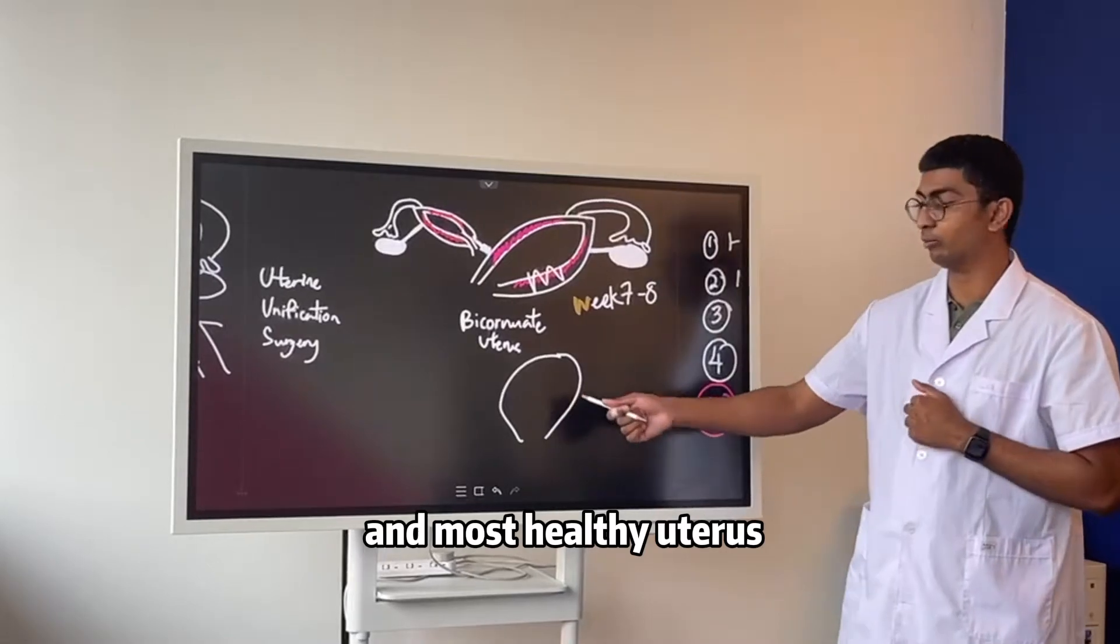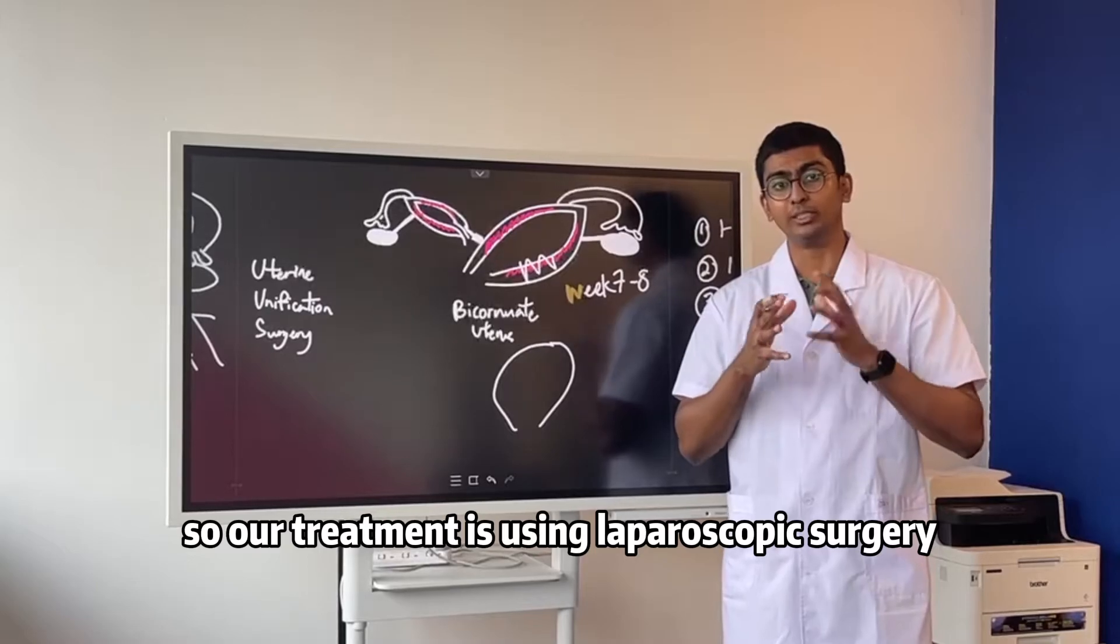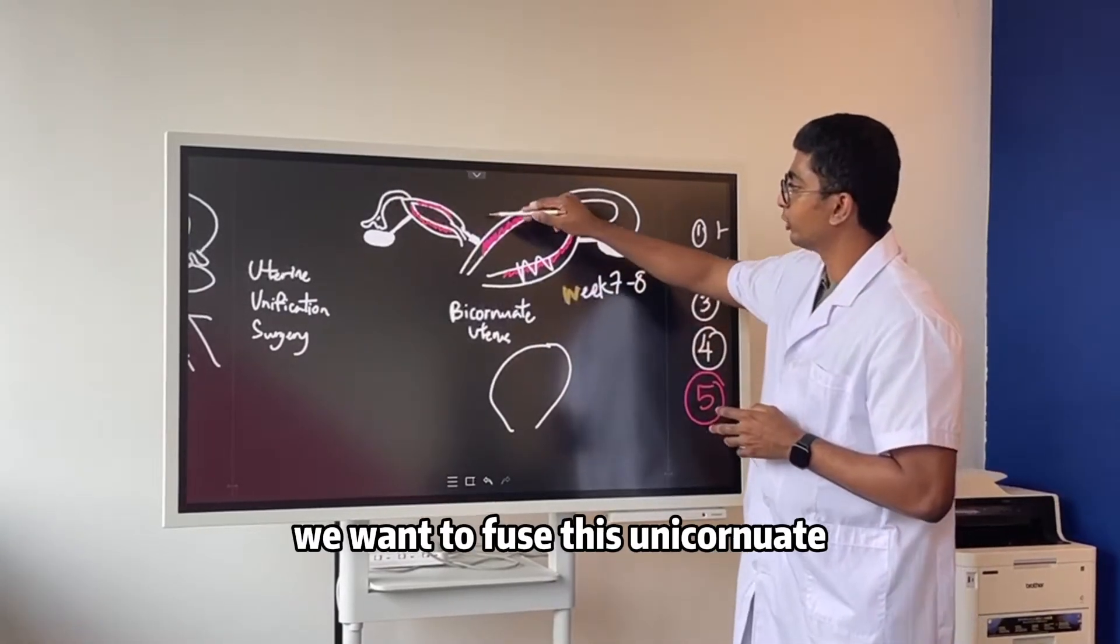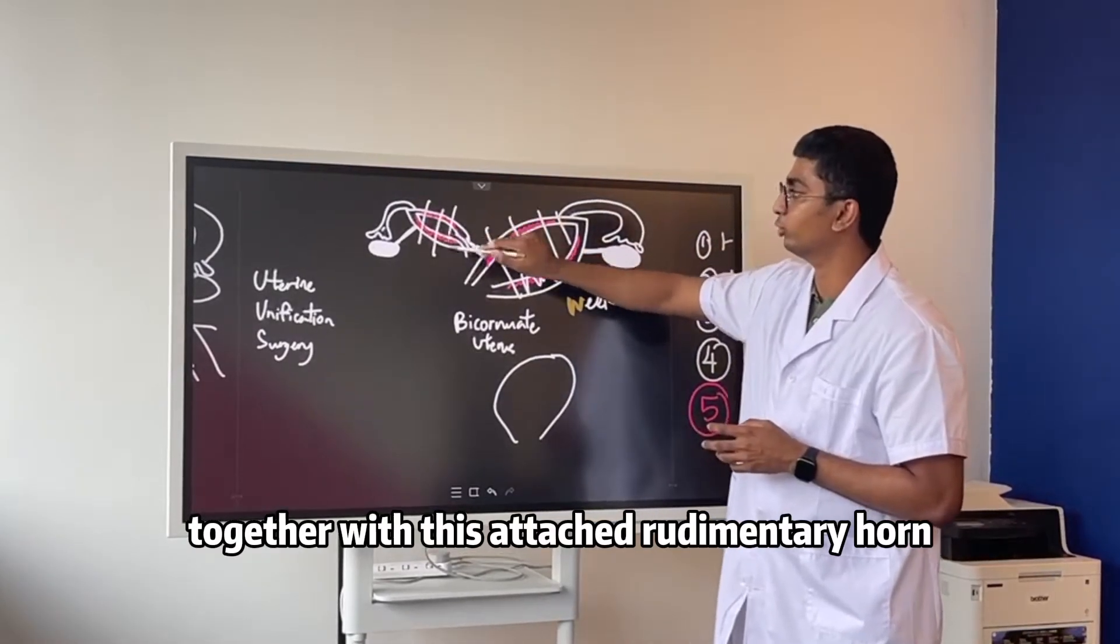Well look, most healthy uteruses look like this. So our treatment is using laparoscopic surgery before pregnancy. We would like to fuse this unicornuate together with this attached rudimentary horn.